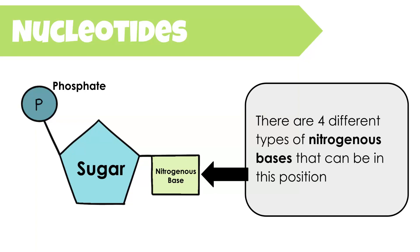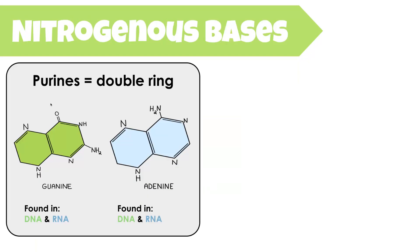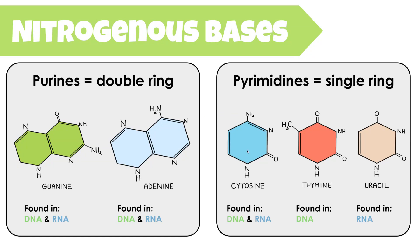Two of our nitrogenous bases are classified as purines, meaning they have double carbon-based rings. These are guanine (G) and adenine (A), and both are found in DNA and RNA. The remaining nitrogenous bases are pyrimidines, forming a single carbon-based ring. The pyrimidines are cytosine (C), thymine (T), and uracil (U). Cytosine is found in both DNA and RNA, thymine is only in DNA, and uracil is only in RNA. The fact that these are double or single rings is important for the structure of these larger polymer molecules.